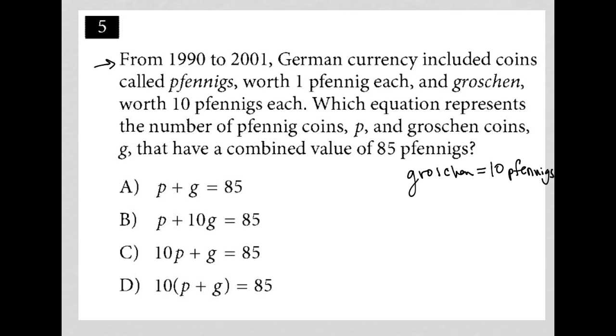All right, the next sentence says, which equation represents the number of pfennig coins? Okay, so now we're dealing with variables, not just names. So the number of pfennig coins, P, so that's the number of pfennig coins, and groschen coins, G, so that's the number of groschen coins,